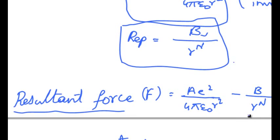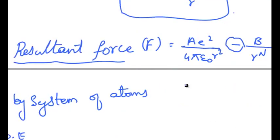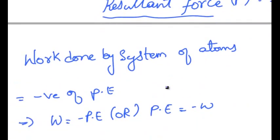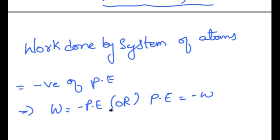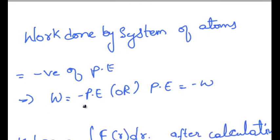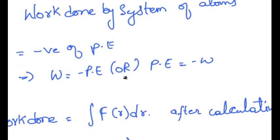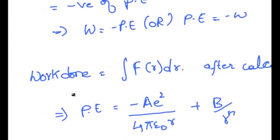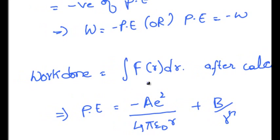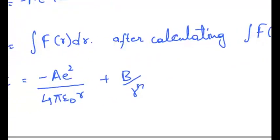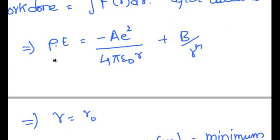Since the repulsive force is in the opposite direction to the attractive force, we get a negative sign for the repulsive force. Work done by the system of atoms is equal to negative of potential energy, that is W is equal to minus PE, or PE is equal to minus W. Work done is equal to integration of F of r dr. After calculating this integration we get potential energy equal to minus a e square by 4 pi epsilon not into r plus b by r power n.